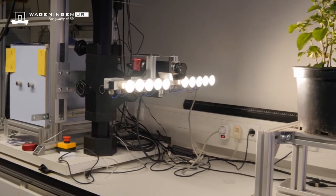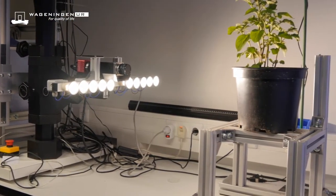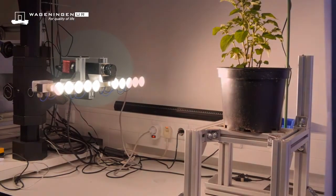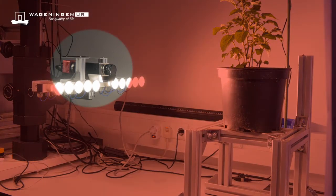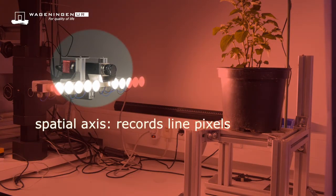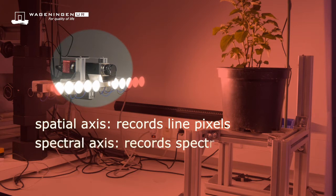The spectrographs are coupled to monochrome matrix cameras. One dimension of the camera, the spatial axis, records line pixels, and the other dimension, the spectral axis, records the spectral information for each pixel.